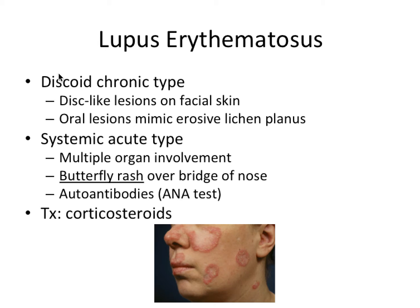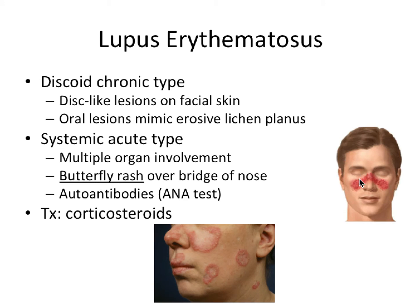Next is lupus erythematosus. The discoid chronic type involves disc-like lesions of facial skin and oral lesions that mimic the appearance of erosive lichen planus. There's also a systemic acute type with multiple organ involvement and the characteristic butterfly rash over the bridge of the nose. The systemic type involves autoantibodies, so an ANA test would be used. Treatment is with corticosteroids.